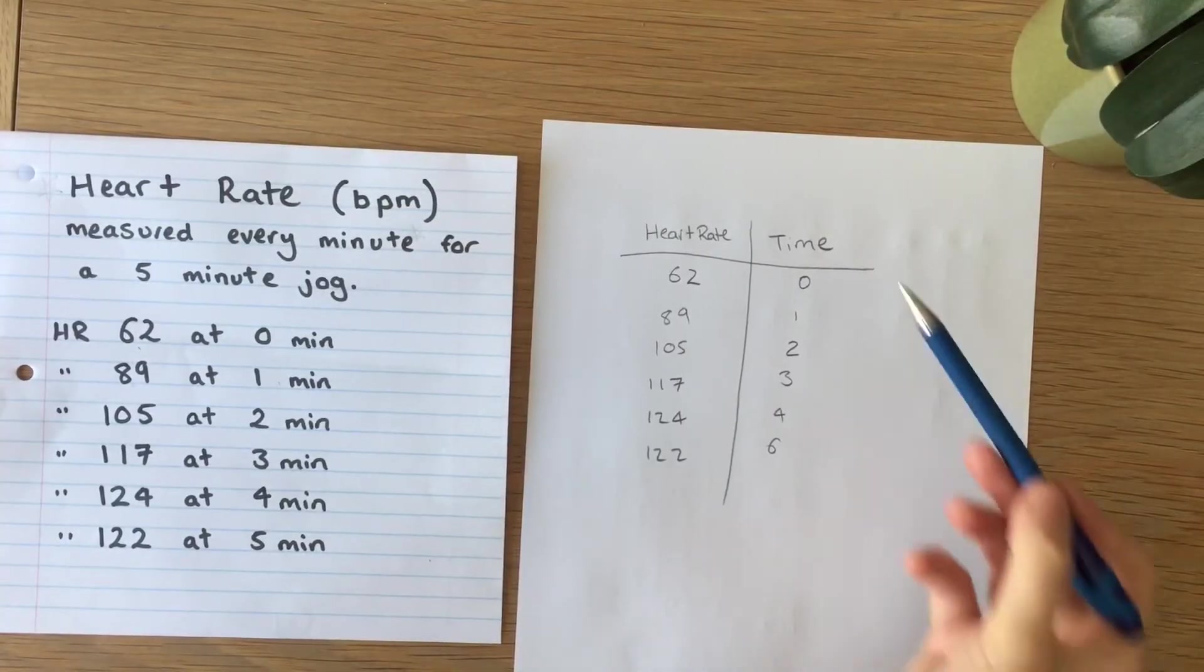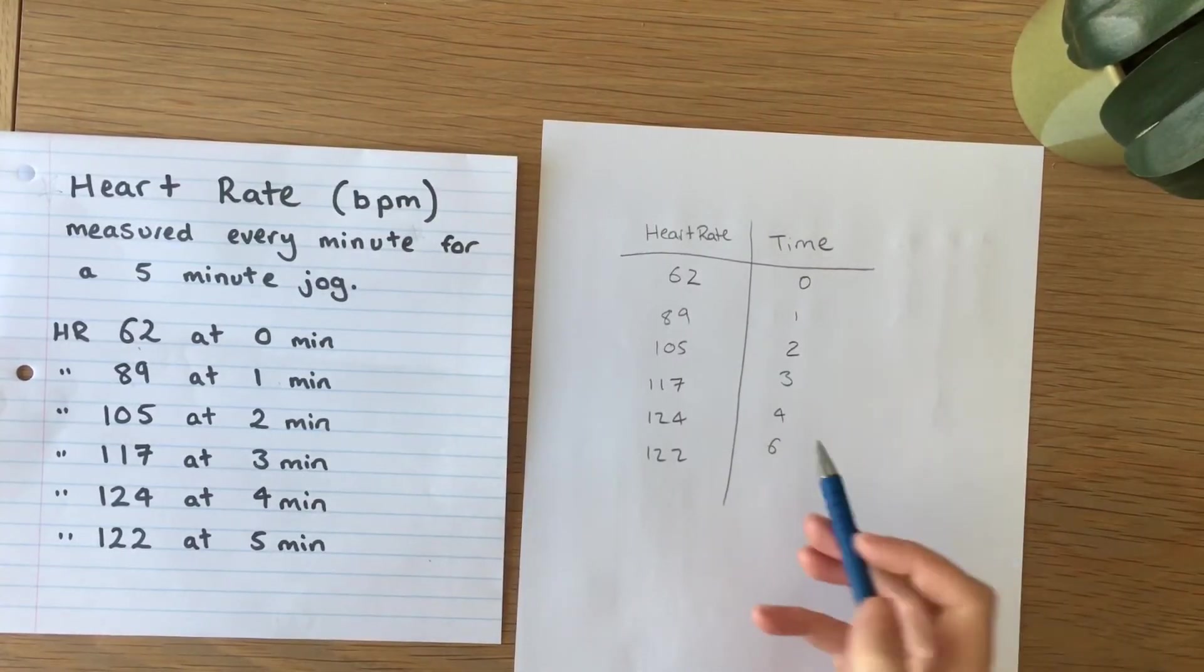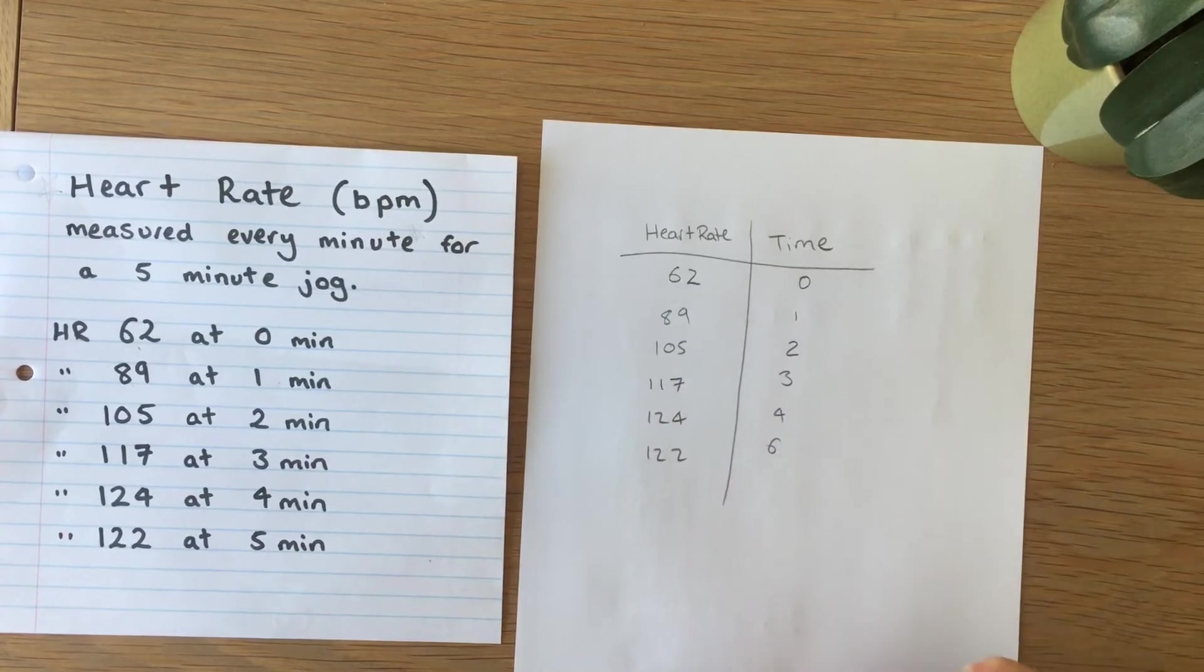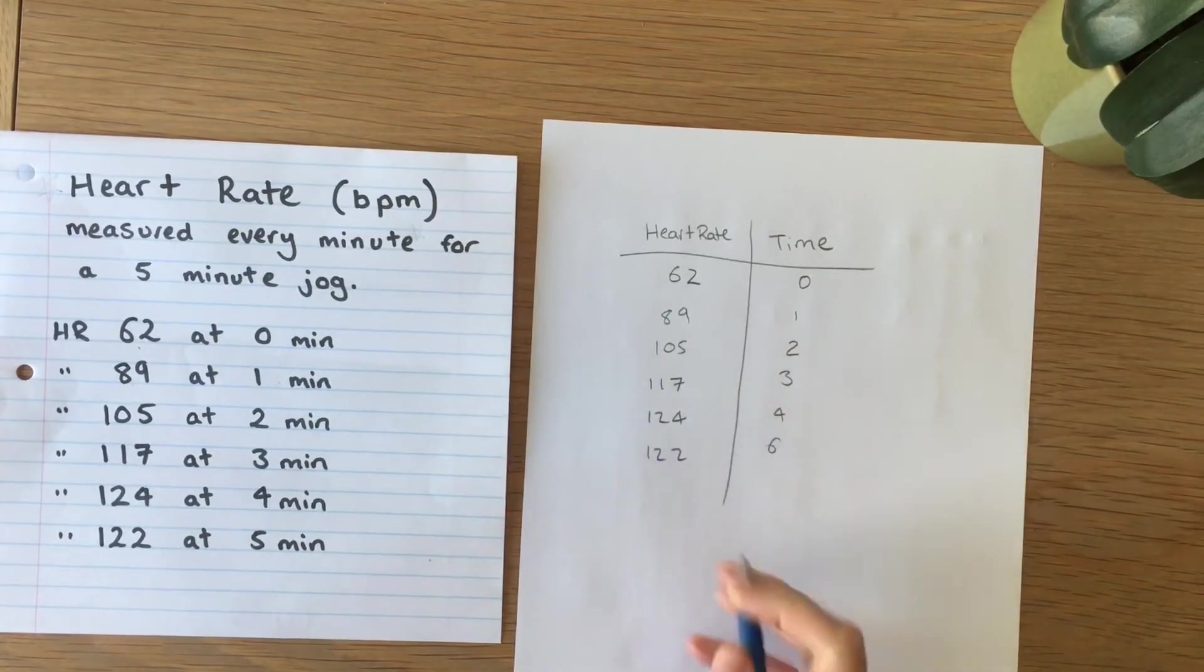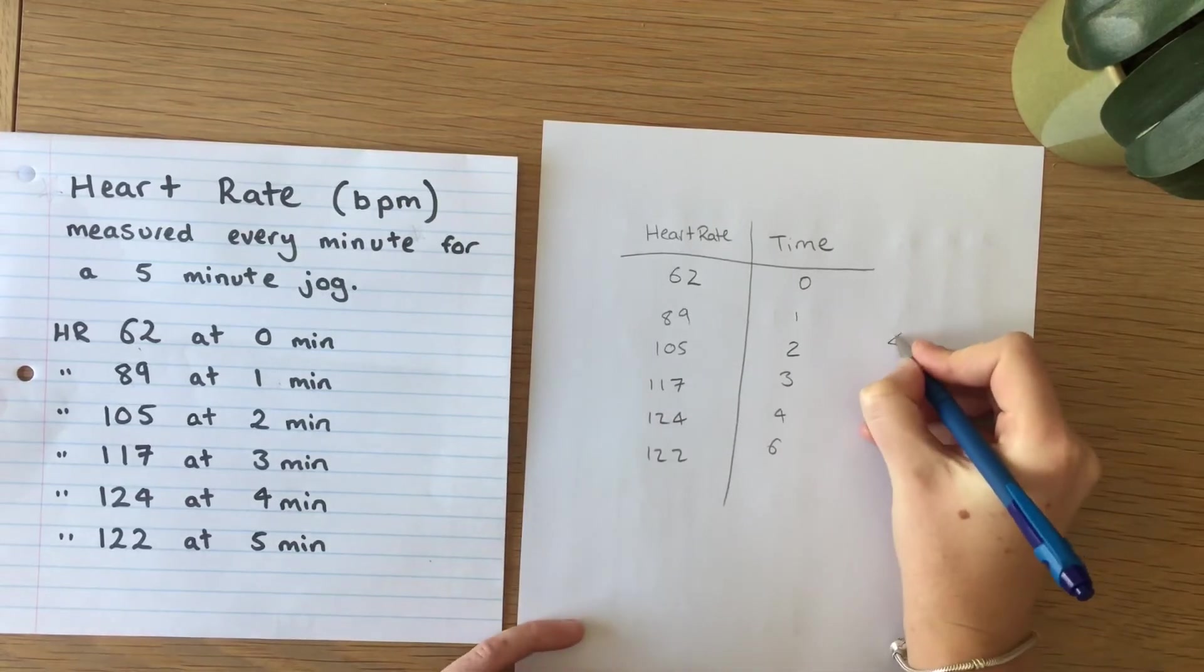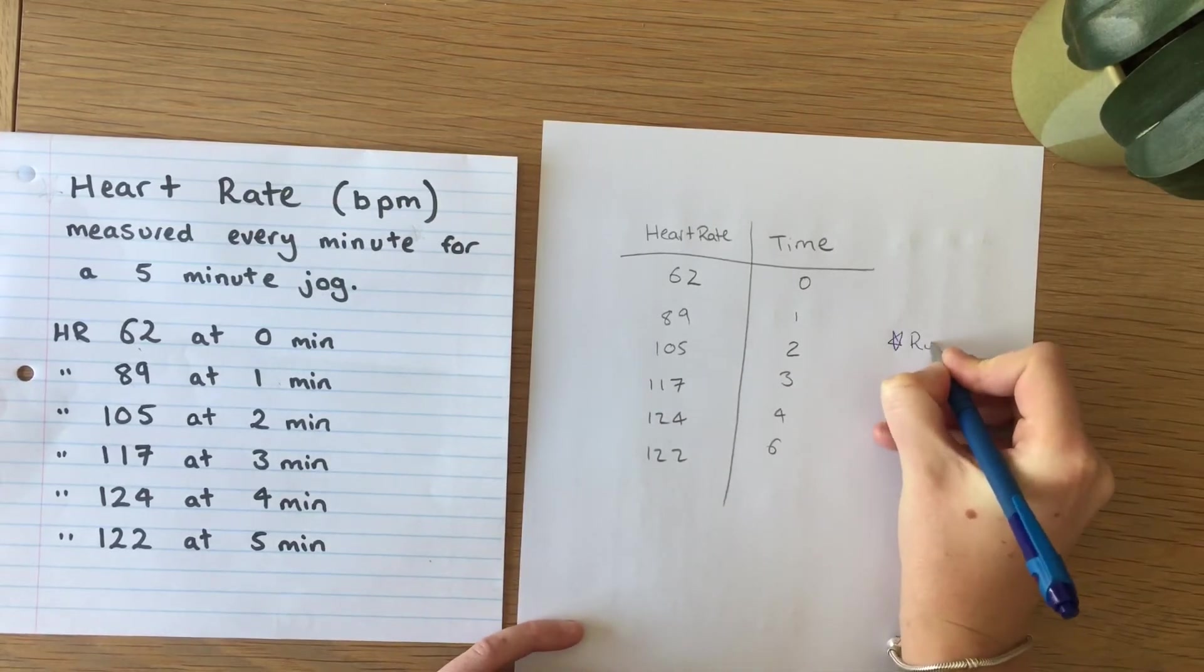Common mistakes to avoid when drawing tables. As you can see a ruler hasn't been used which makes it difficult to read off which numbers correspond with which, so we need to make sure we use a ruler.